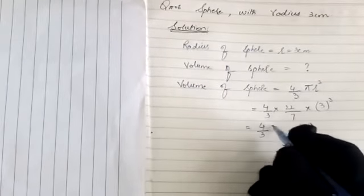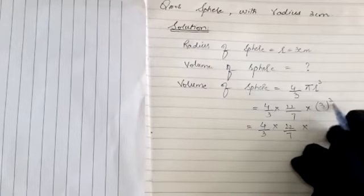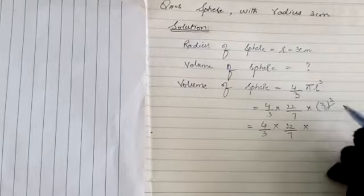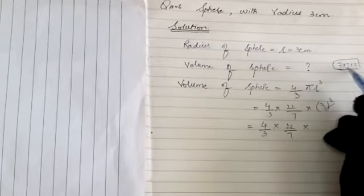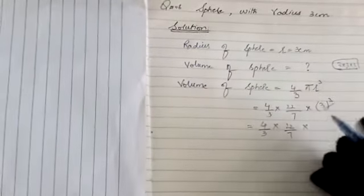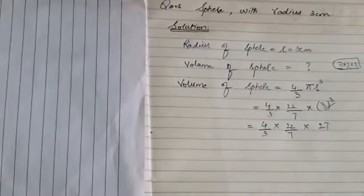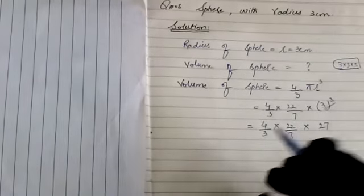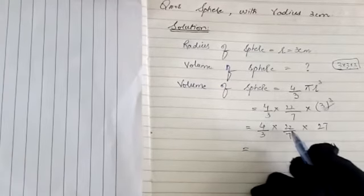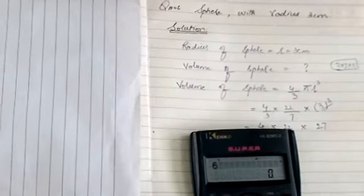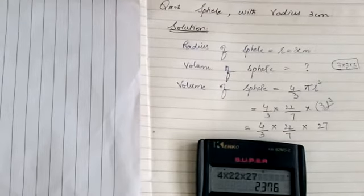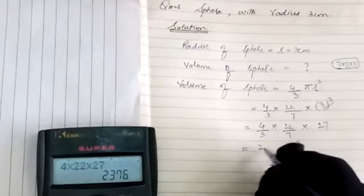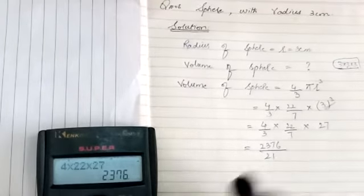4/3 as it is, π is 22/7. Now for r³: as I told you before, 3 cubed is not just 3 times 3 equals 9. It means 3 multiplied 3 times: 3 × 3 = 9, then 9 × 3 = 27. Now multiply: 4 × 22 × 27 using a calculator gives 2376, divided by 7 × 3 = 21.